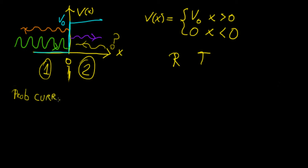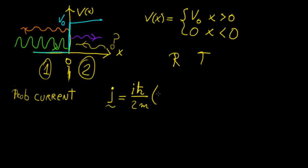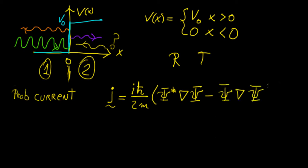A probability current, which is also known as a current density or a probability flux, is denoted by the letter j. If we draw it in three dimensions, it would have the following form. It is a complex expression: ℏ/(2m) times the quantity [ψ* ∇ψ minus ψ ∇ψ*], where the asterisk denotes the complex conjugate.